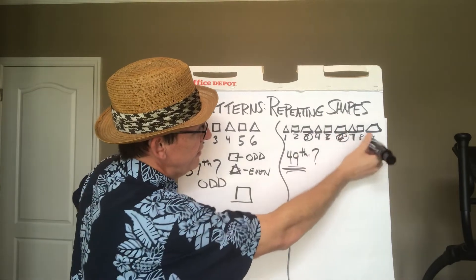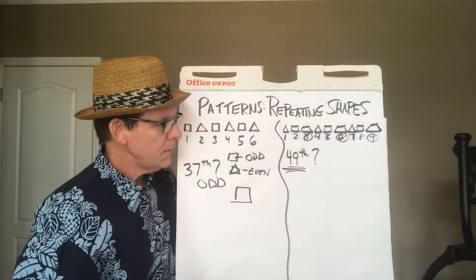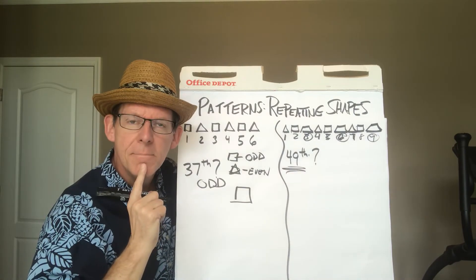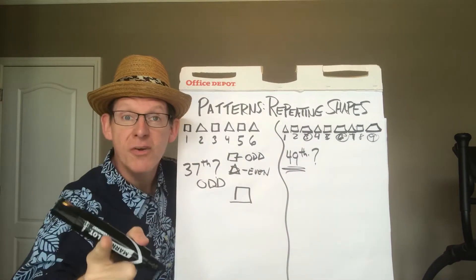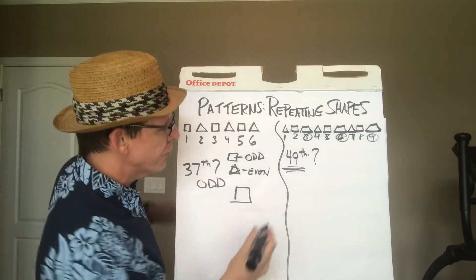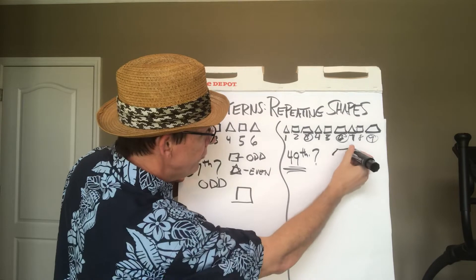I can count by threes. Three, six, nine. So when we count by a number, that's called a what? Yeah, it's called a multiple. A multiple. So all the multiples of three are the trapezoid.